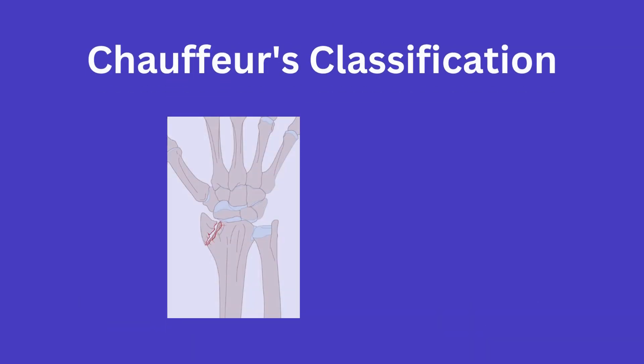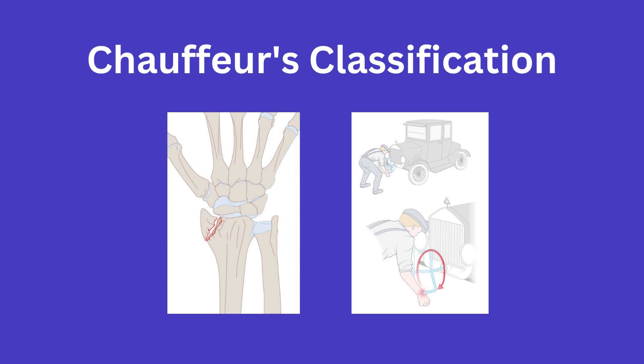Finally, we have the Chauffeur fracture, which is a fracture of the radial styloid. It got its name as the bony prominence was commonly struck by chauffeurs working on cars. This one has been pretty low yield on rotation, but you are now aware of this eponym and that it exists.